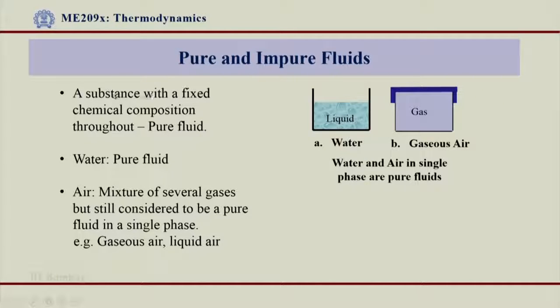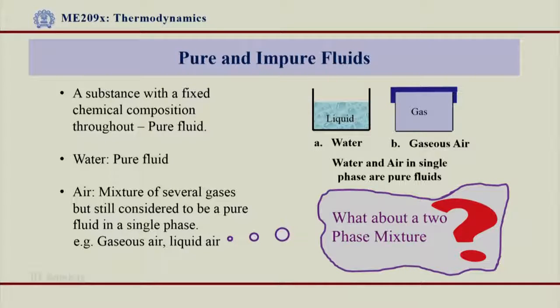By the definition — a substance with a fixed chemical composition throughout — I call it a pure fluid. With this definition, water in liquid form or single phase, and air, are pure fluids. The question is: what about a two-phase mixture? If I have a two-phase mixture of water — liquid and vapour together — or for air, gaseous air and liquid air together, is it qualified to be called a pure fluid?